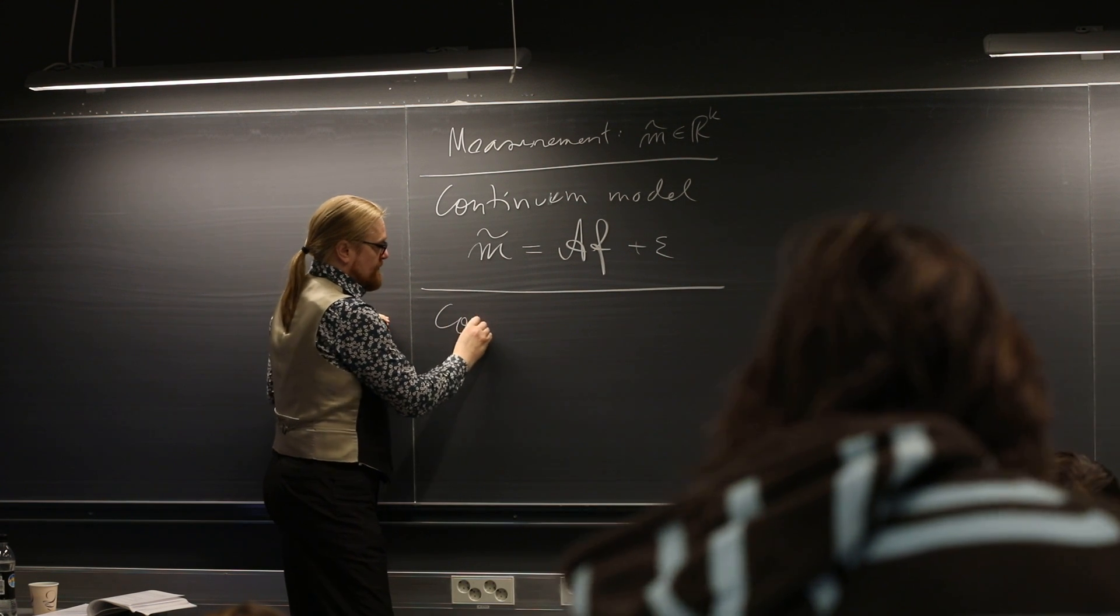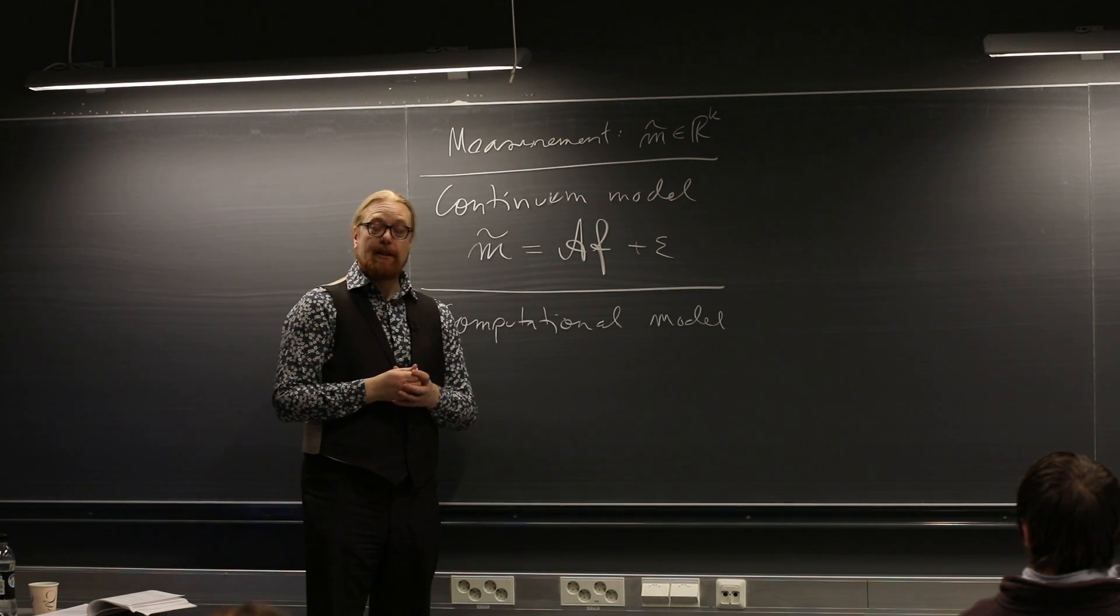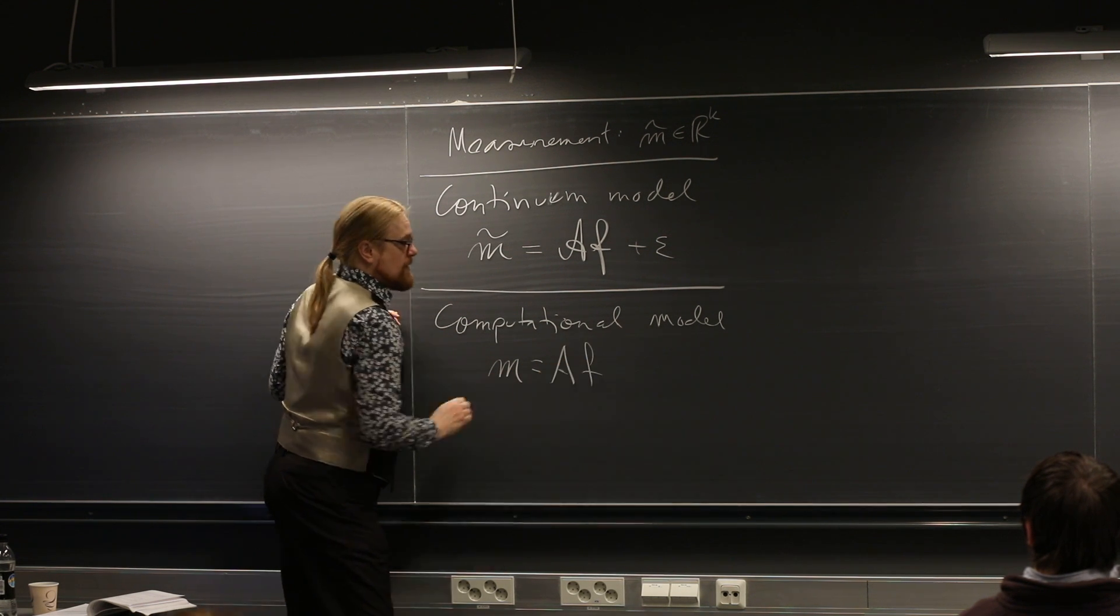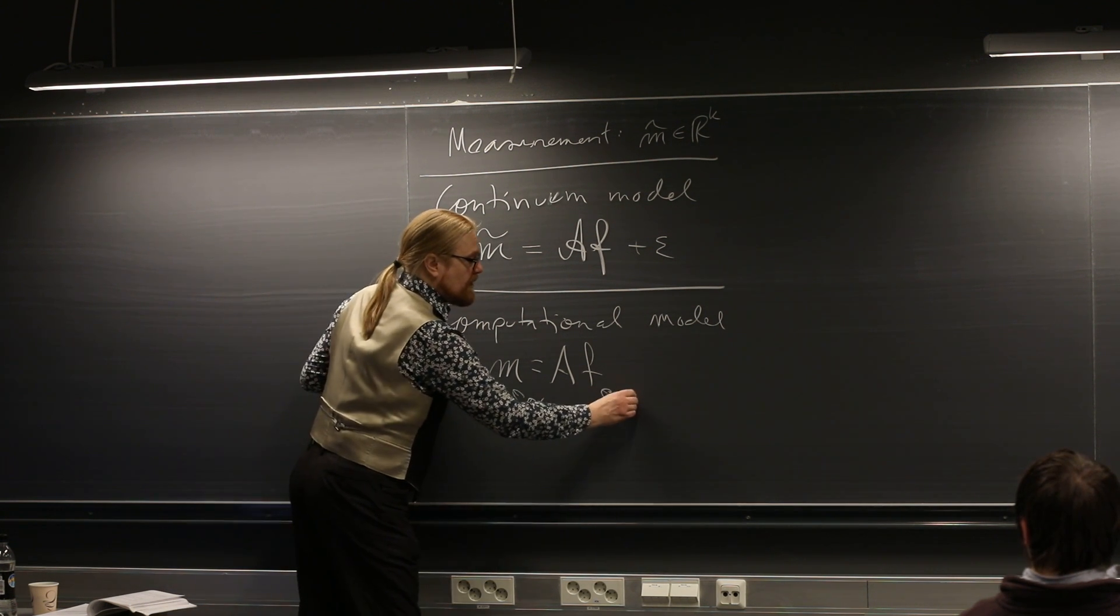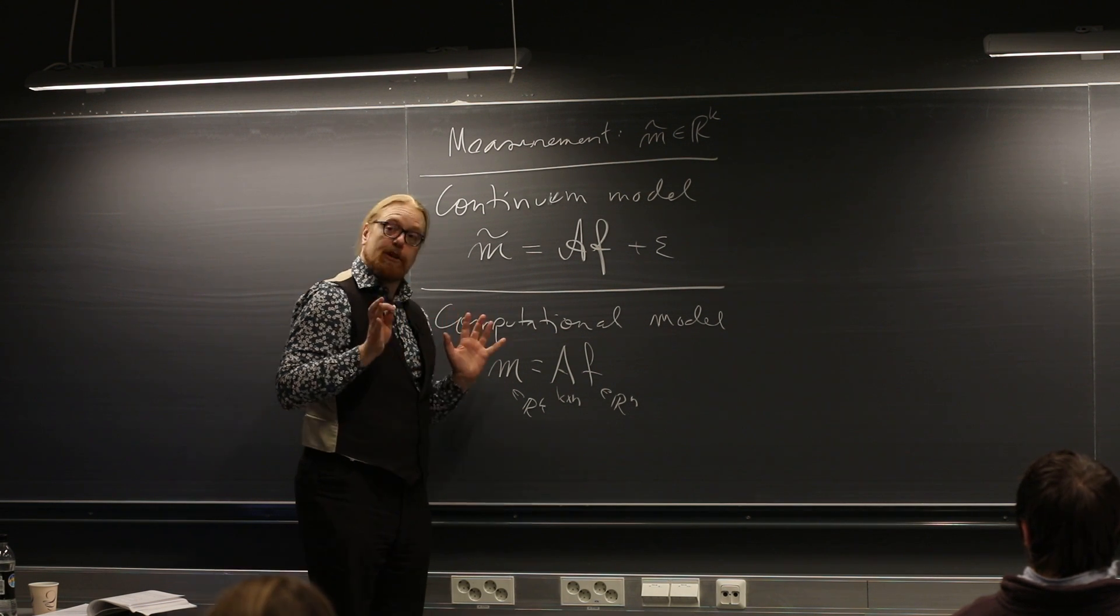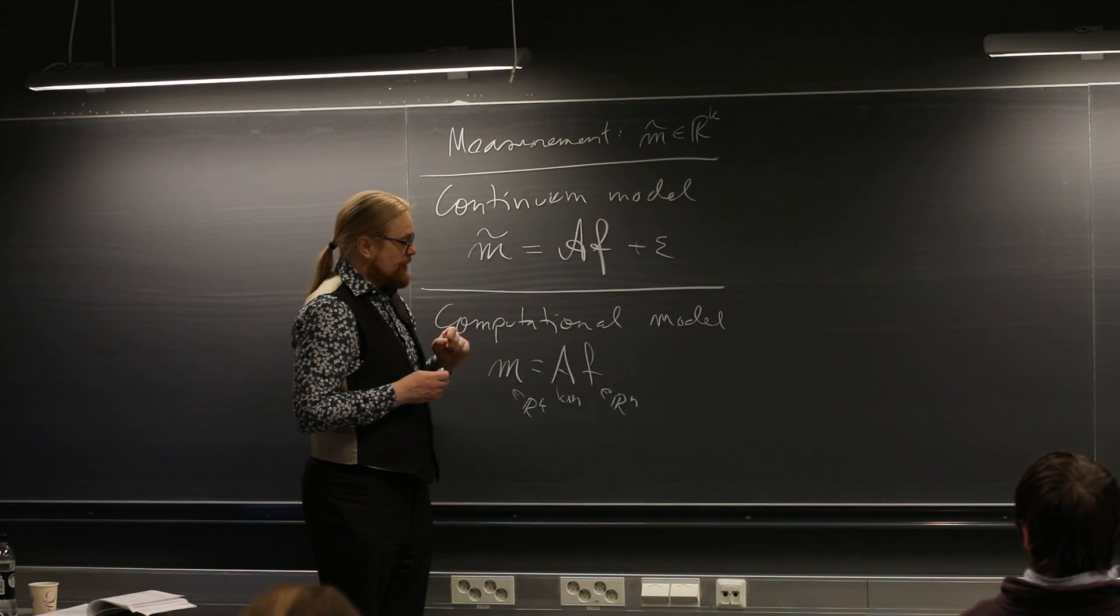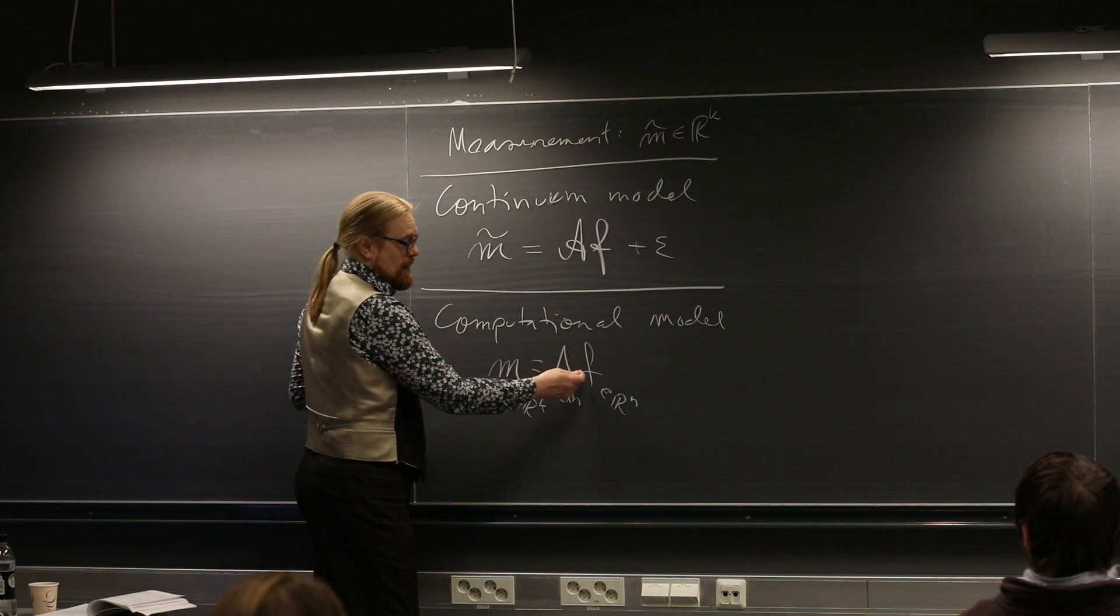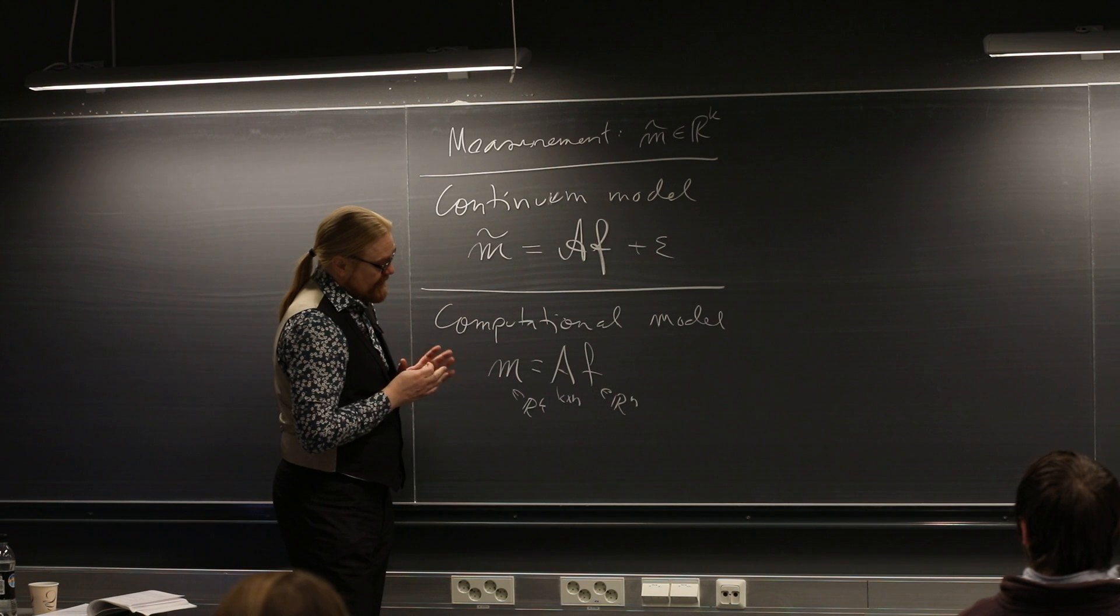And then we have the computational model. Or actually I shouldn't say we have it, it's something we need to build for our inversion process. So there, this is a matrix vector model, where M is in R^K, F is in R^N, and A is in K by N matrix. And the idea is that, in some suitable sense, the vector F should be an approximation to this function F_ubitral. The A matrix should be modeling whatever this linear operator A_ubitral is doing. And if the vector is a good approximation and we are working with high resolution, then this vector should be close to this one. That's somehow the idea.